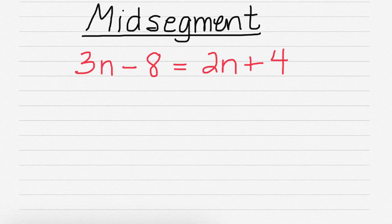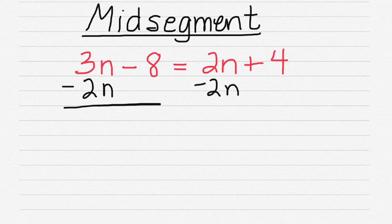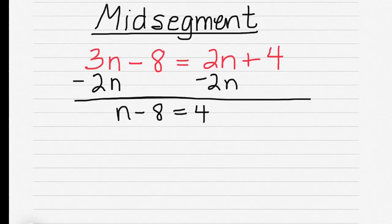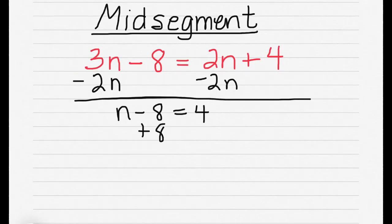I decided to move over to another page so you can see the calculations. I'm going to subtract 2N from both sides, and I'm left with N minus 8 equals 4. If I add 8 to both sides, I get N is equal to 12.